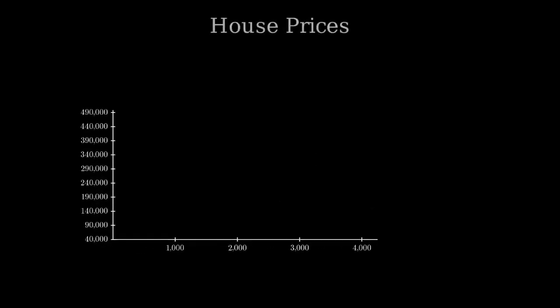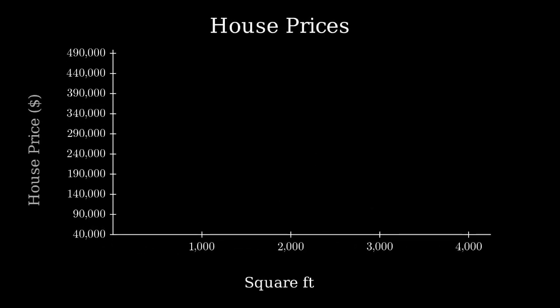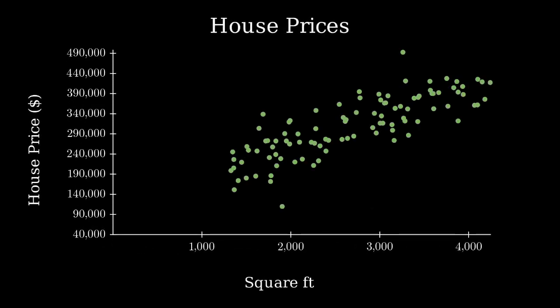As an example scenario with continuous response, we can try to predict house prices given some number of input features. One type of regression model would fit a line to this data.